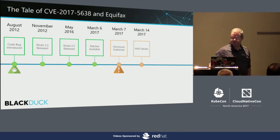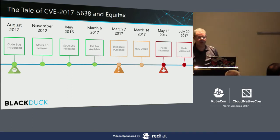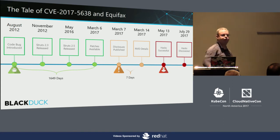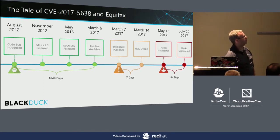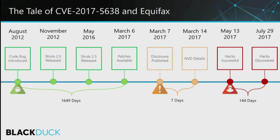That prepared testimony was given October 3rd. May 13th, some hacks were truly successful, and it took them until July 29th to figure that all out. We had almost 1,700 days from the time the code was introduced to the time the patch was available. Seven days delay in the National Vulnerability Database, and 144 days from the time the attack occurred to the time it was discovered and mitigated. Equifax actually did a better-than-average job of figuring this out.